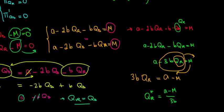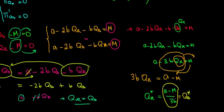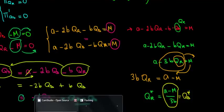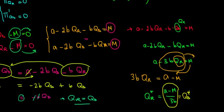And recall this is also equal to the quantity sold to the discount customers — that's the relationship we found. So we've determined both quantities in terms of the intercept, marginal cost, and slope. Let's leave it there for this video. In the next video, we'll finish by finding the profit-maximizing prices.